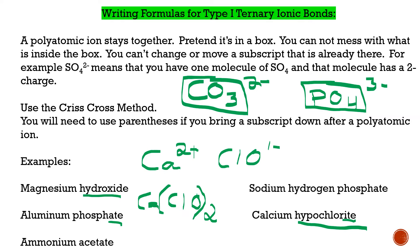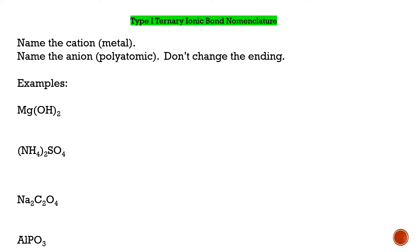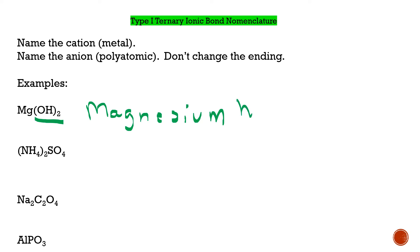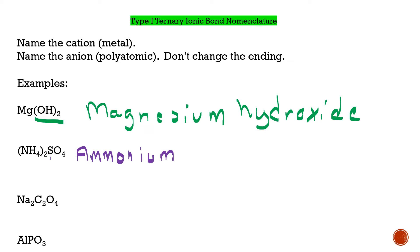Let's go on to naming polyatomic ions — ternary ionic nomenclature. This is easy: you name the cation, then you name the anion, which is your polyatomic. Don't change the ending this time. So for Mg(OH)2: magnesium is our metal/cation, and OH is our polyatomic — look on your polyatomic ion chart and find that it's hydroxide. So the name is magnesium hydroxide. For NH4SO4: NH4 is our cation — ammonium — and SO4 is sulfate. So it's ammonium sulfate.